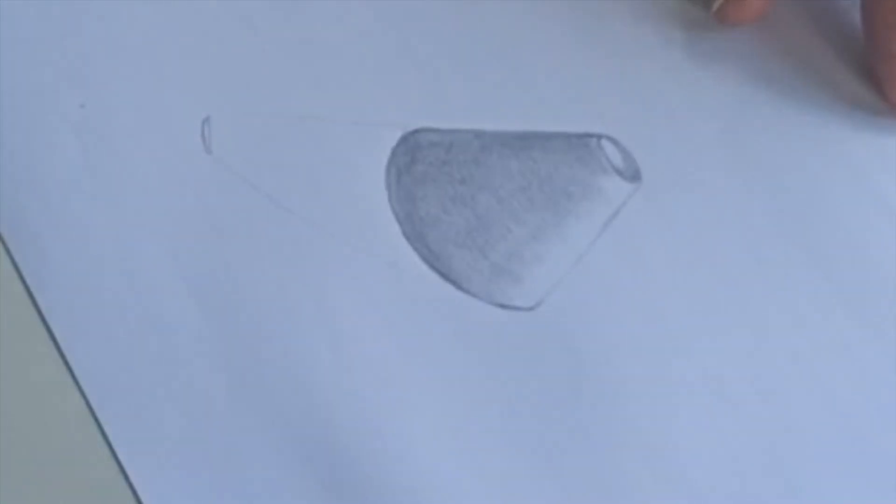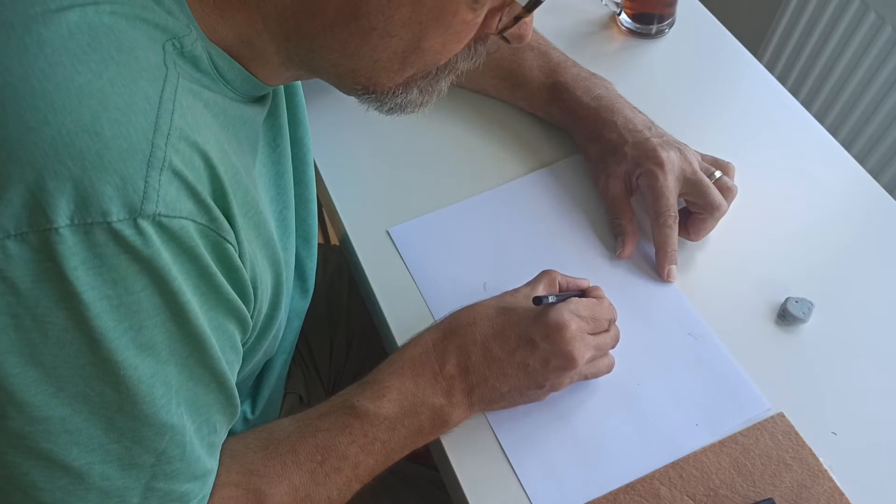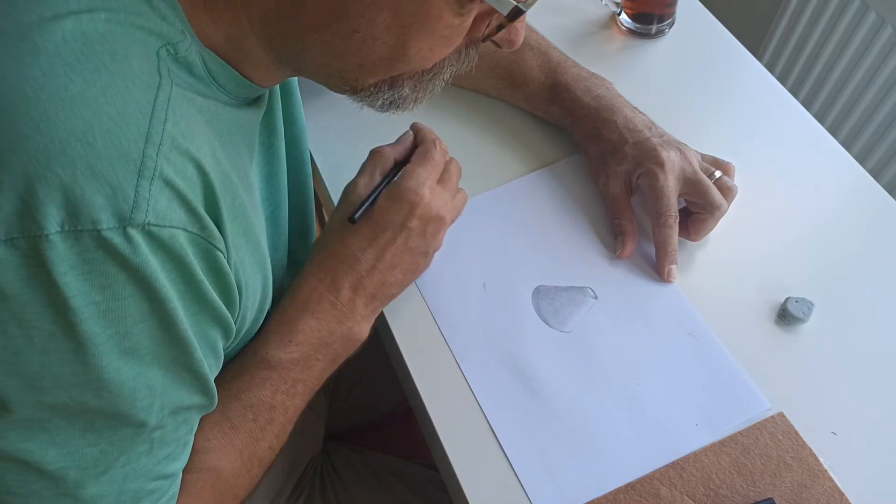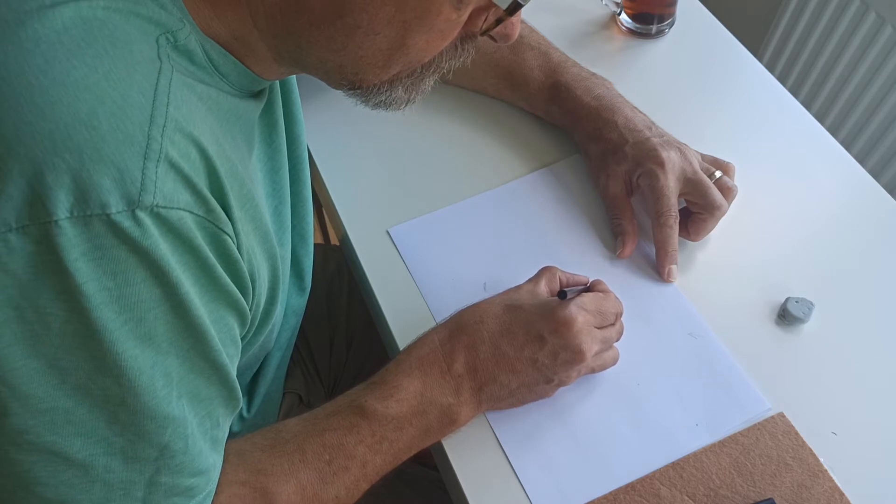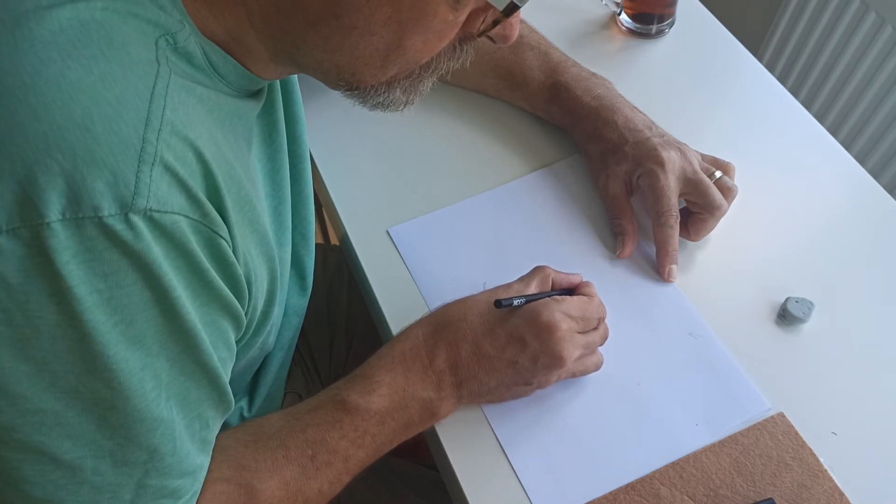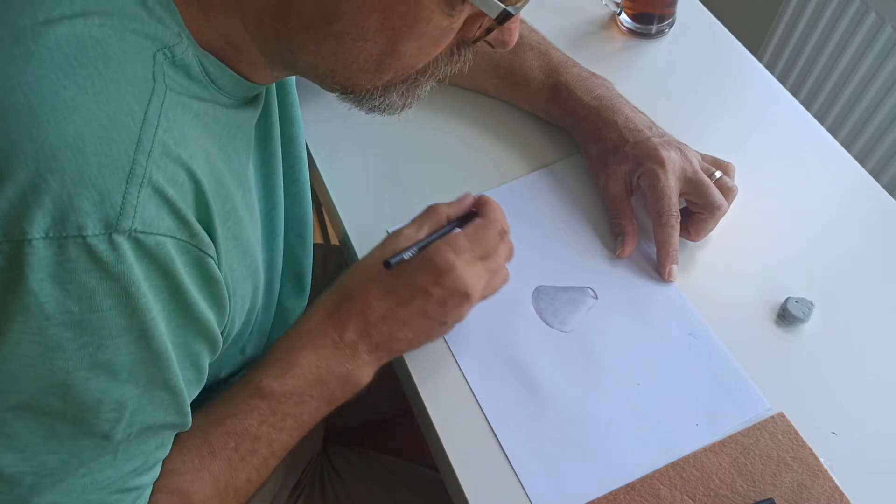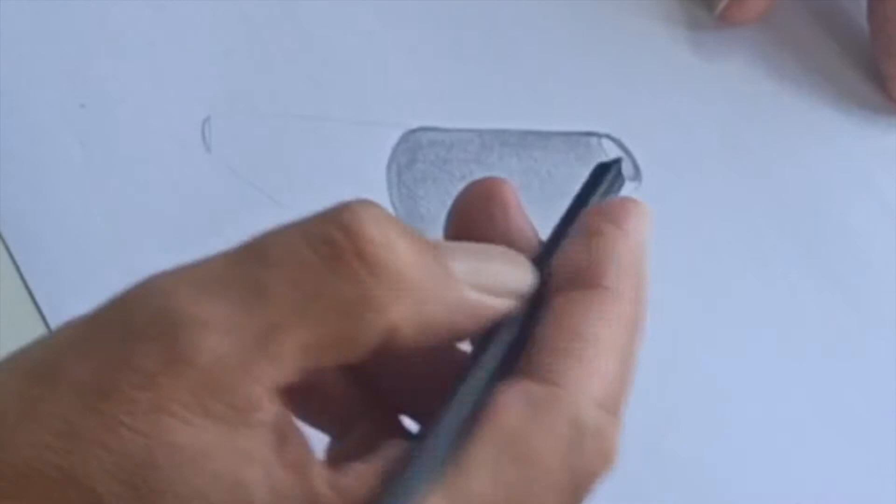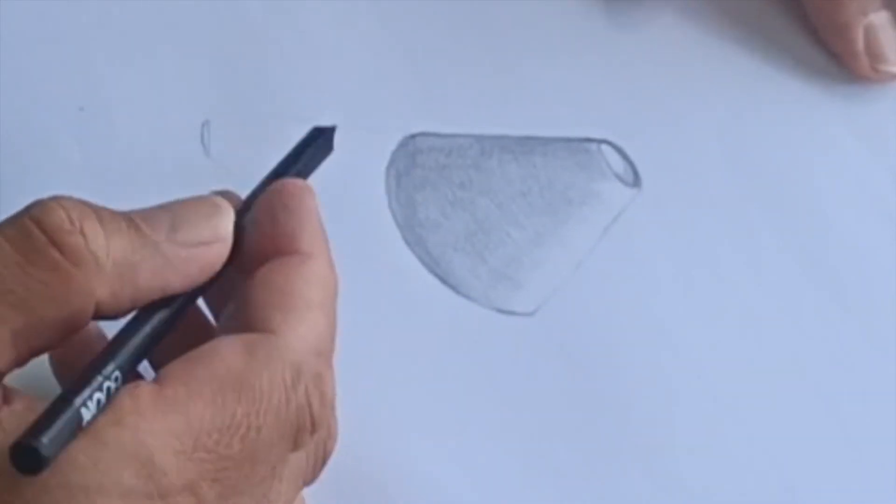You could get another pencil, like I've got here. It's got a sharp edge on it. Maybe come down here, do that again. Amazing, sharpening your pencil, you can make it go darker. Now let's do the shading part.